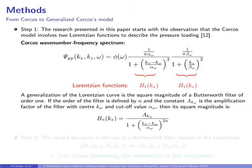The research presented in this paper starts with the observation that the Corcos model involves two Lorentzian functions to describe the pressure loading, one in the streamwise direction kx and the other one in the spanwise direction kz. In fact, when it comes to the integration over an infinite domain, the Lorentzian function allows mathematical simplifications that keep the Corcos model fully analytical in certain cases. Note that a generalization of the Lorentzian curve is the square magnitude of a Butterworth filter of order 1.